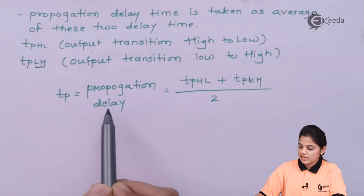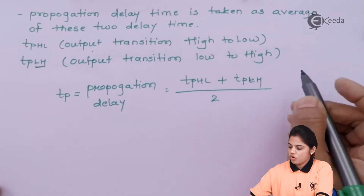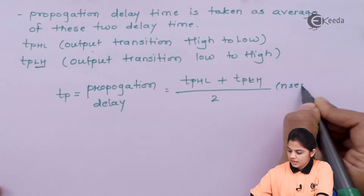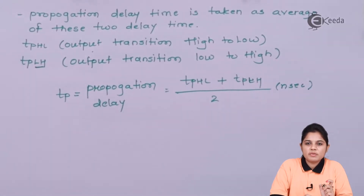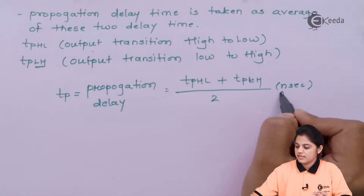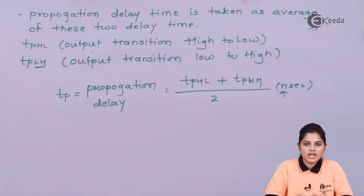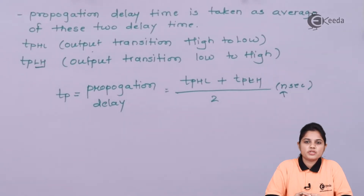Propagation delay can be calculated by taking the average of the two delay times and it is always measured in nanoseconds. As the propagation delay should ideally be zero but that is not possible, it should be as low as possible — remaining in the nanosecond range. The lesser the delay, the faster the output transition, and the higher the speed of operation of that device.